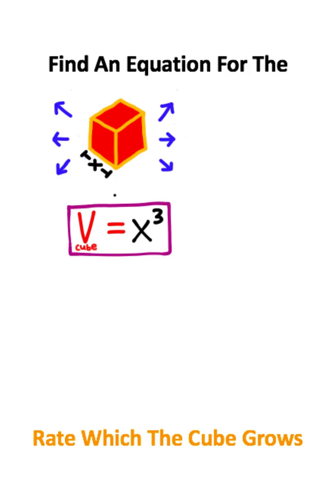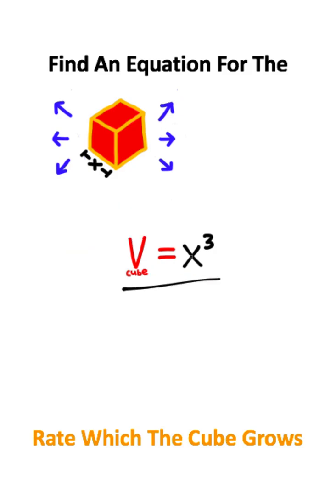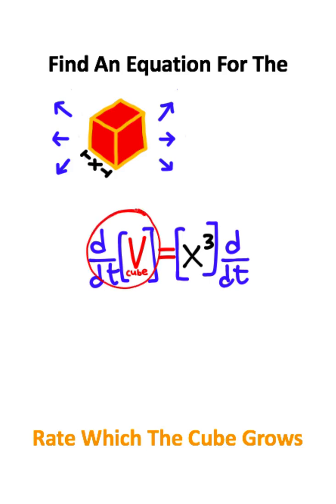The problem with this equation is this will only give you the volume of the cube at one specific time. So the way that I can adjust this formula to actually work for this growing cube is by taking the time derivative of both sides of this equation. The time derivative of volume is just going to be dV over dt.